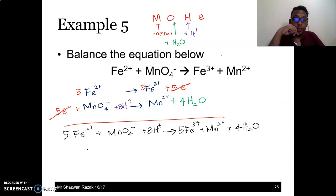So we check again. 5 Fe, 5 Fe, 1 Mn, 1 Mn, 4 oxygens, 4 oxygens, 8 H plus 8 H. And then the charge is 10 minus 1 plus 8. So 10 minus 1 is 9, plus 8 is 17, positive 17. Here 15 plus 2 is also positive 17. So the charge is also balanced. This is how you balance redox equations in acidic medium.